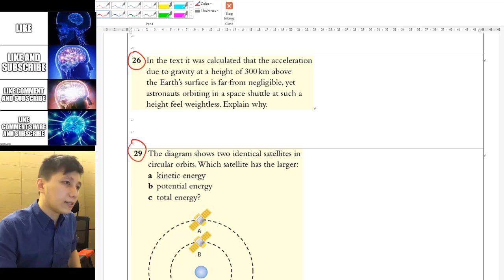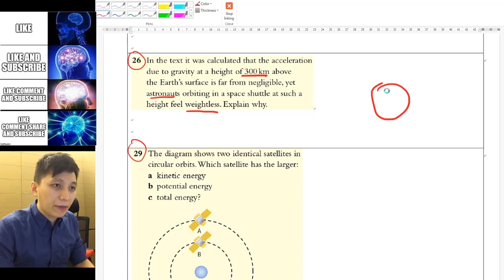Question 26. It is asking you why the astronaut would feel weightless at the height of 300 km above the Earth's surface.